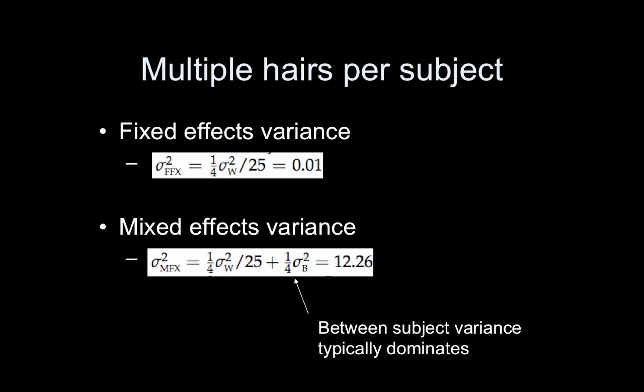Typically, the between subject variance dominates. This is the case for fMRI data, too. It's definitely good to have a few runs per subject. But if you collect three runs versus, say, six runs, depending on your study, those extra three runs probably aren't going to help much. You're better off spending your money on more subjects.